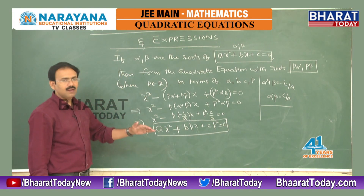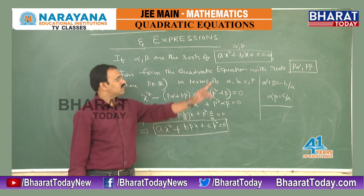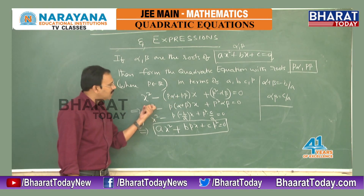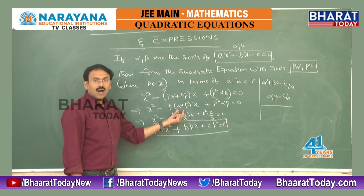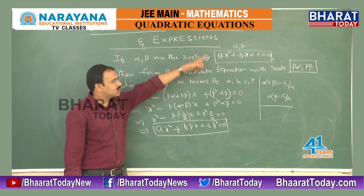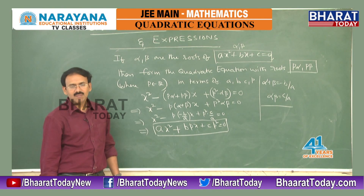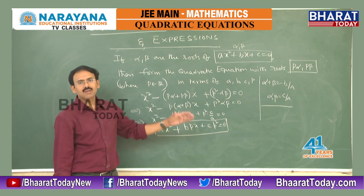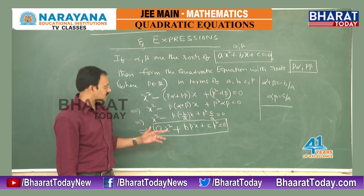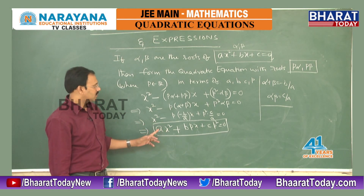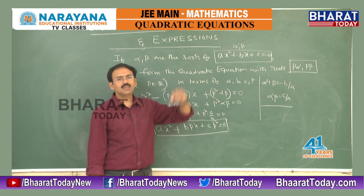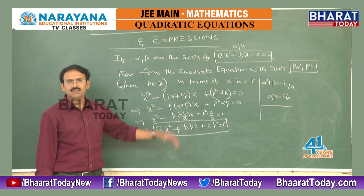It is simple: I wanted a quadratic equation with p·alpha and p·beta as roots. I applied the formula, took p common, and alpha + beta and alpha·beta appeared as roots of the original equation. Replacing alpha + beta with -b/a and alpha·beta with c/a, and multiplying by a, the required equation in terms of a, b, c, p is ax² + bpx + cp² = 0. That is what was asked, so this is the answer.